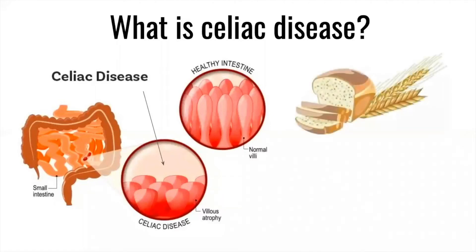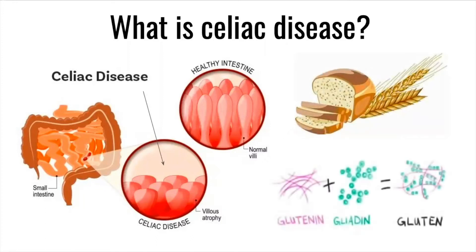What exactly is gluten? It's a protein found in wheat, rye, and barley, and it's made up of two proteins known as gliadin and glutenin, with gliadin being the main cause for inflammation. Gluten can be found in most baked goods, pasta, bread, beer, some processed foods, and medications.